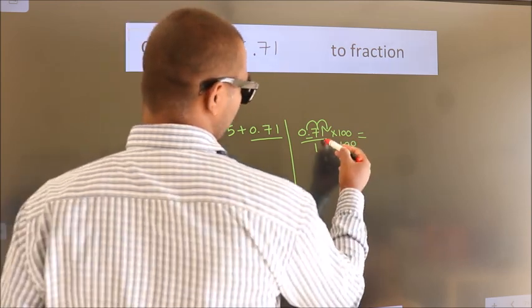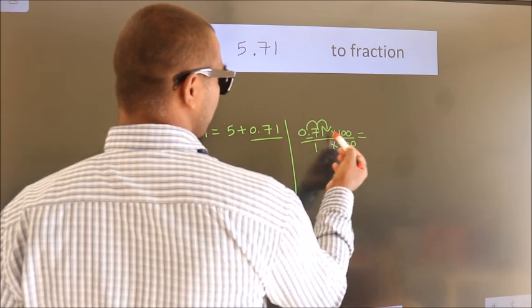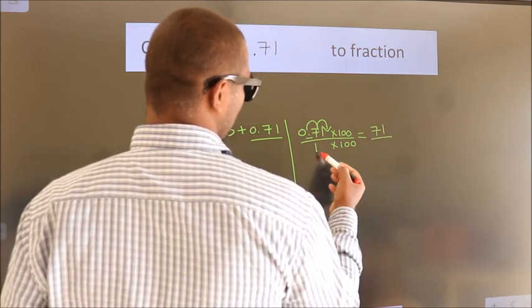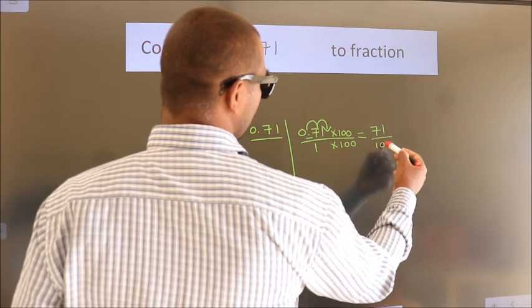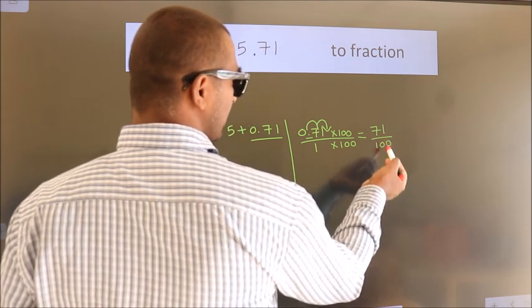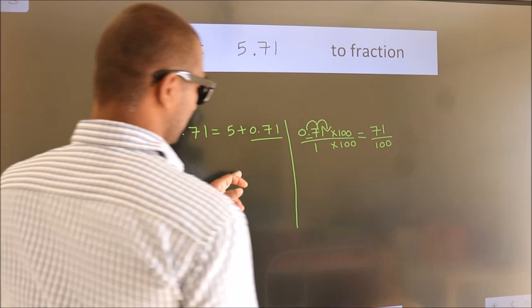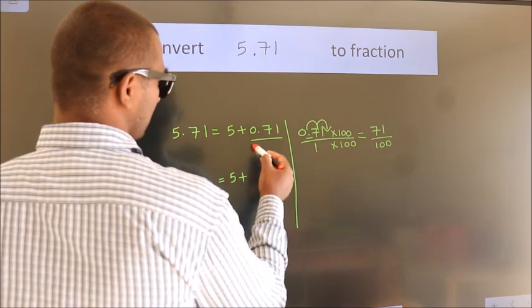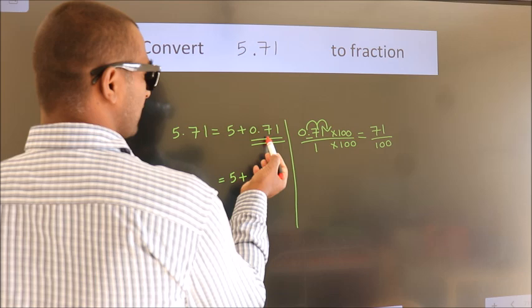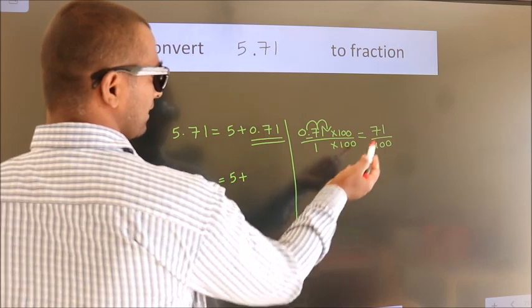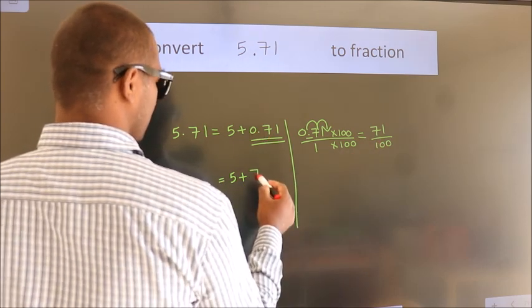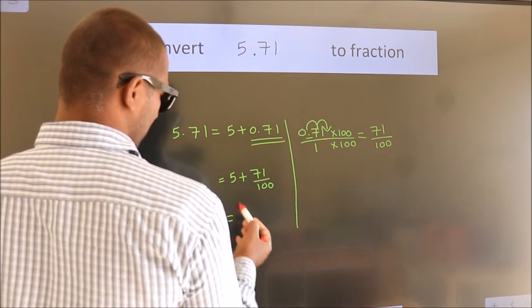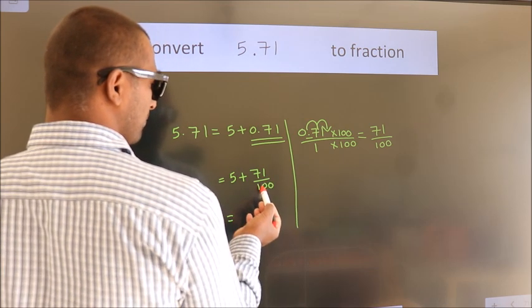Next, 0.71 times 100 equals 71. 1 times 100 equals 100. This is the fraction we got. Now here, 5 plus - in place of 0.71, we write this fraction: 71 by 100. So 5 plus 71 by 100.